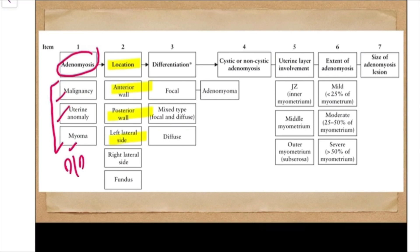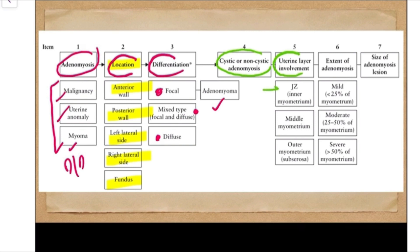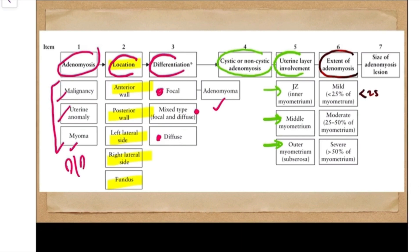In the report, the first thing to provide is the location — whether it is in the anterior wall, posterior wall, left lateral, right lateral, or the fundus. Then differentiate whether the adenomyosis is focal, diffuse, or mixed (both focal and diffuse). When focal adenomyosis is very distinctly visualized with a well-defined boundary, we call it a focal adenomyoma. Next, indicate whether it is cystic or non-cystic, and specify the uterine layer involvement: inner myometrium or junctional zone, middle myometrium, outer myometrium, or sub-serosal layer. Also provide the extent — mild: less than 25% of uterine body involved; moderate: 25–50%; severe: more than 50%. Finally, give the size of the lesion.